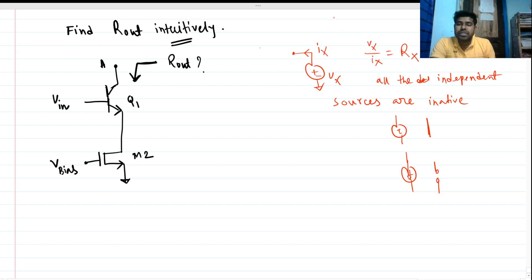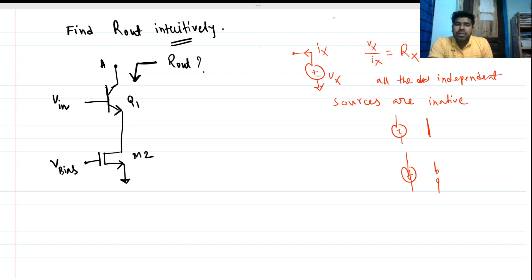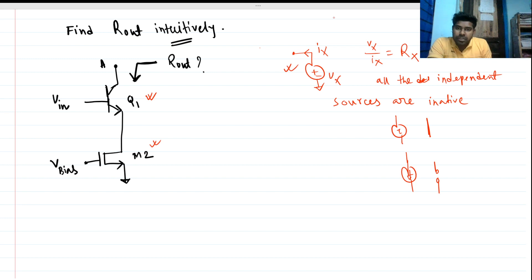For this we have to do the small signal model, since this is a small signal voltage and we need to do small signal analysis. We know the small signal model of this BJT and this MOSFET.